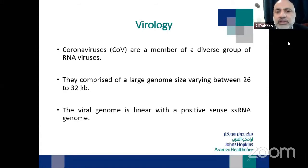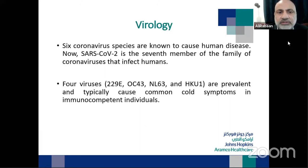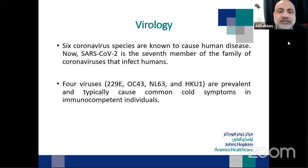Coronaviruses are a member of a diverse group of RNA viruses. Their genome size varies between 26 to 32 kilobases. It is linear, single-stranded, positive-sense RNA. These viruses can be found in the respiratory, gastrointestinal, hepatic, and central nervous systems of humans, bats, cattle, bears, rodents, and various other wild animals. Before COVID-19, six coronavirus species were known to cause human disease; SARS-CoV-2 is the seventh member of the family.